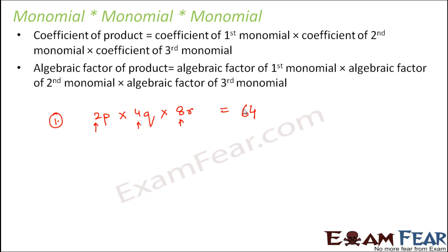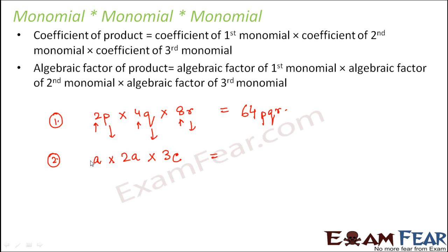The algebraic factor is the product of all three: p into q into r, which gives pqr. So 64pqr is the product. Next example: a into 2a into 3c. Numeric coefficients: 1 into 2 into 3 gives 6. Algebraic part: a into a gives a², into c gives a²c. So the result is 6a²c.